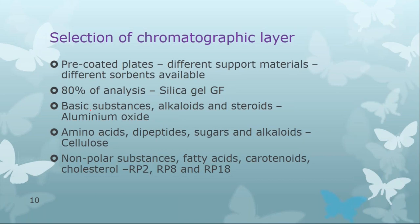For basic substances, steroids, and sterols, aluminum oxide can be used. For amino acids, dipeptides, sugars, and alcohols, separation can be done using cellulose as the chromatographic layer. For non-polar substances like fatty acids, carotenoids, and cholesterol, reverse phase systems are required — using RP-2, RP-8, or RP-18, that is C2, C8, and C18 as the stationary phase.